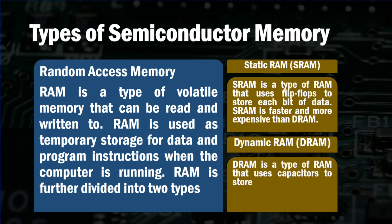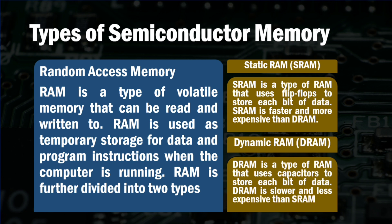RAM is further divided into two types. The first one is static RAM (SRAM). SRAM is a type of RAM that uses flip-flops to store each bit of data. SRAM is faster and more expensive than DRAM.